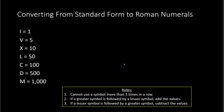So starting with one — that's the letter I, a capital letter I, just a straight line up and down. Two would be two I's, three would be three I's. Now remember rule number one: we cannot use a symbol more than three times in a row. So I cannot have four I's for four. For four, I put the letter I and then V — the lesser symbol I is before the greater symbol V, so I subtract one from five: five minus one is four. So the symbol for four is IV.